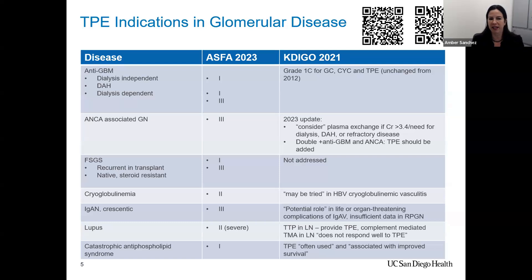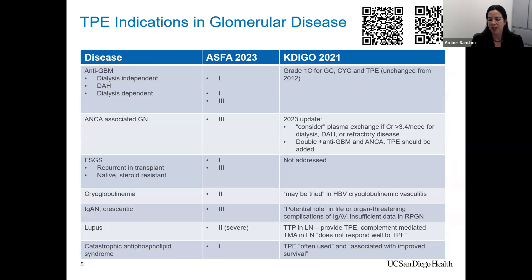We all know anti-GBM, and then the current controversies in ANCA vasculitis, but also recurrent FSGS can sometimes use it, cryoglobulinemia, parasitic IgAN, severe cases of lupus, catastrophic antiphospholipid syndrome, and other TMAs like atypical HUS — these are also cases where we'll sometimes be adding plasma exchange.